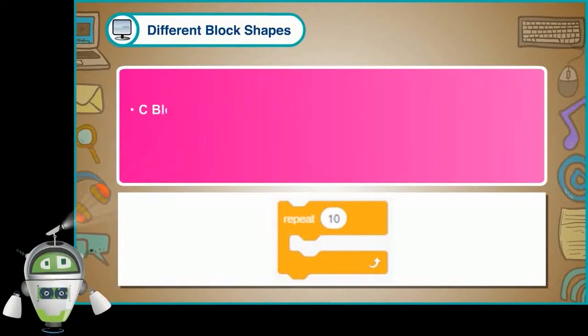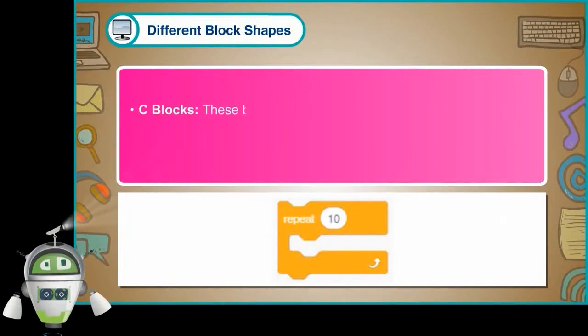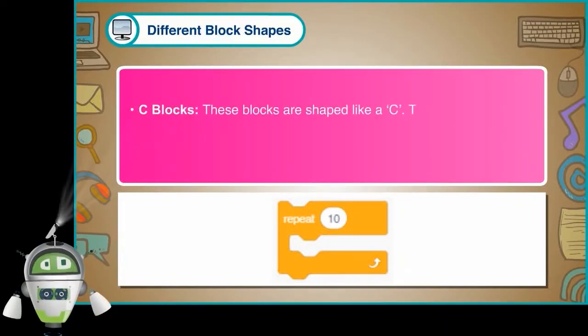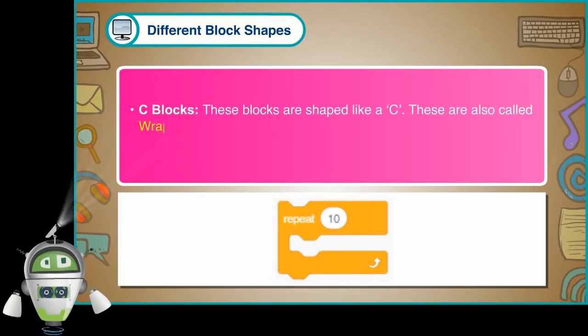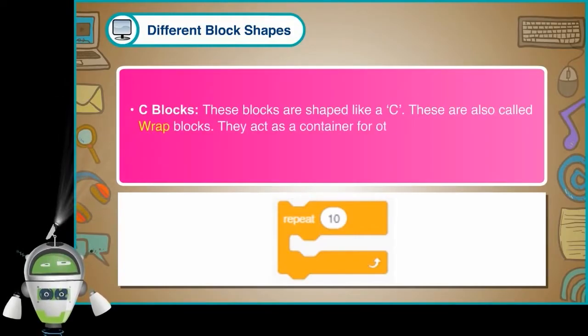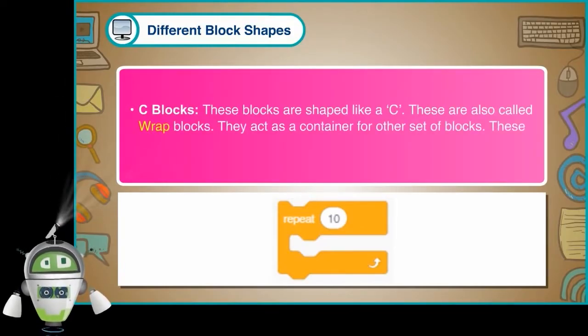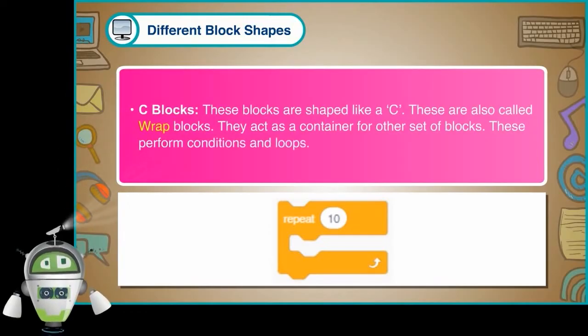C Blocks: These blocks are shaped like a C. These are also called Wrap Blocks. They act as a container for other sets of blocks. These perform conditions and loops.